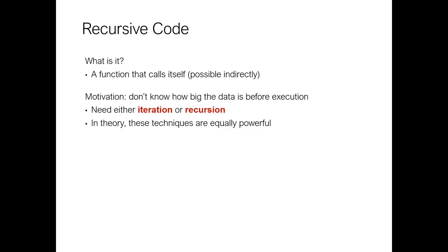Why do we care? What's the motivation? Some of the reasons we care is that we often don't know how big our data set is — this was the primary motivation behind iteration. Iteration and recursion are equally powerful techniques. In theory, any problem we can solve with iteration can also be solved with recursion, and vice versa. Think about this as like another way to loop through all of our data. There's almost always one version that's easier, simpler, faster, or just makes the code more understandable.